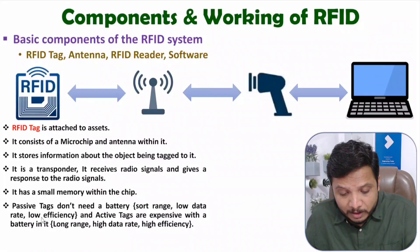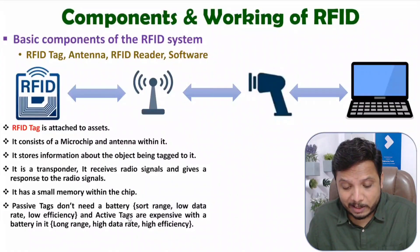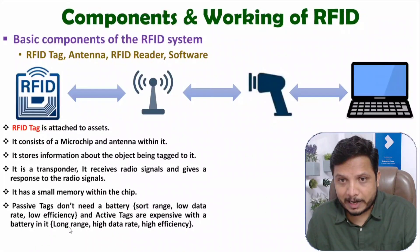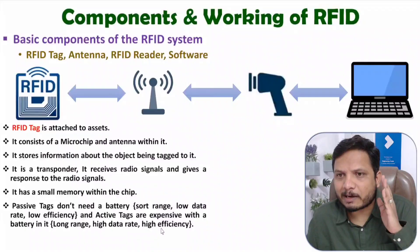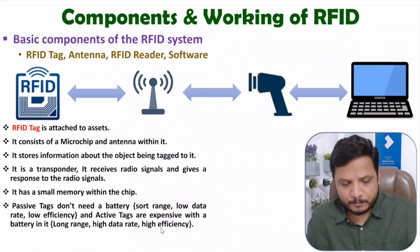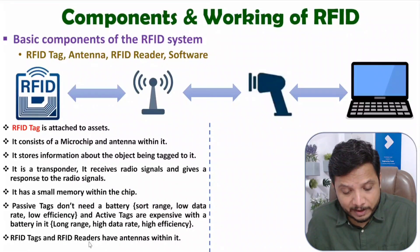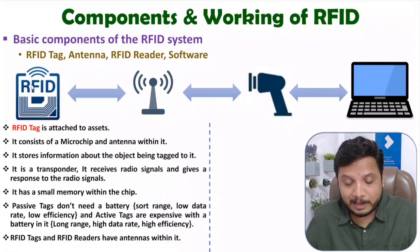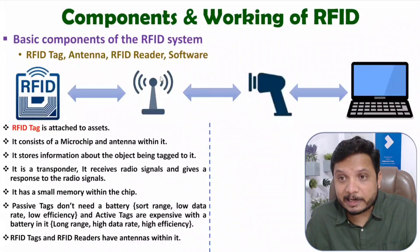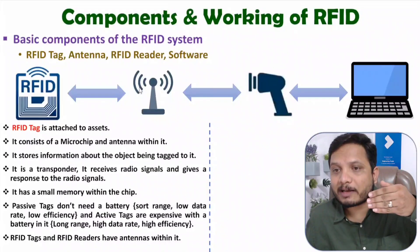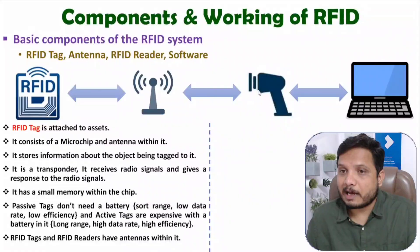In a passive tag, you don't have a battery connected. Active tags are also available and are expensive, as you interface a battery with them. Active tags have a longer range, higher data rate, and higher efficiency. So there are two types: battery-less passive tags and battery-powered active tags. Based on the application, one can select the tag. Both the RFID tag and RFID reader have antennas. The tag definitely has an antenna integrated with it, and the reader can also have an integrated antenna. In some applications requiring longer range, an external antenna may be interfaced with the RFID reader.